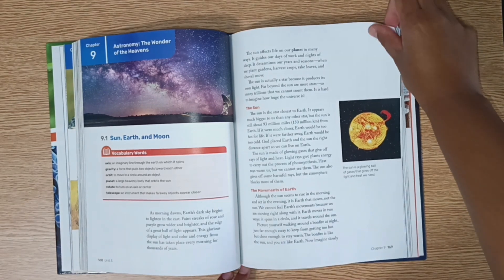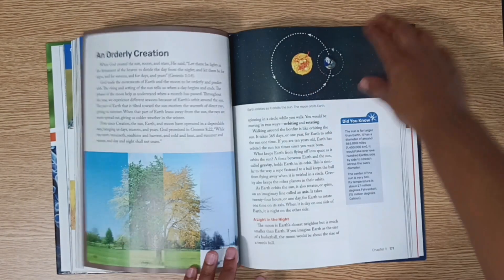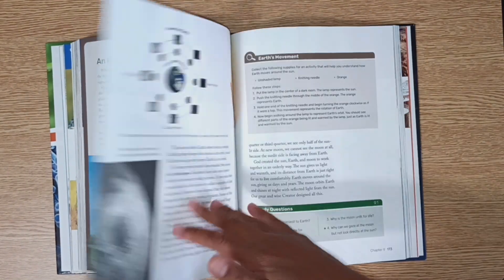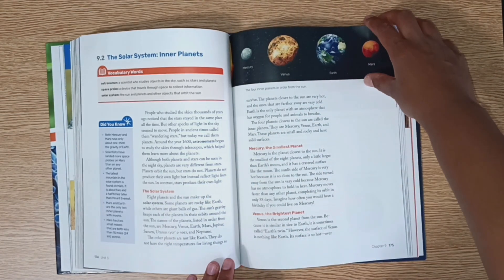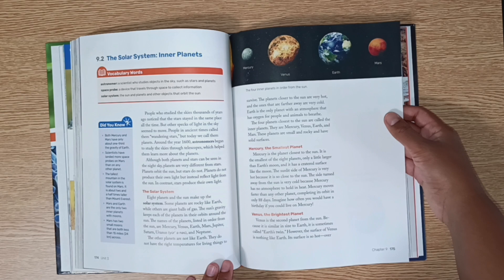This is chapter 9 about the sun, earth, and moon. And this is about the solar system.